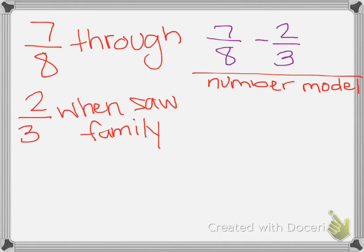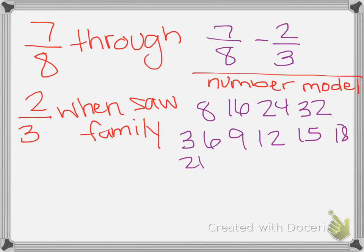Then to actually solve the problem, we have to find a common denominator, because we can't do 7 eighths minus 2 thirds since the denominators are different. So I'm going to list my multiples of 8: 8, 16, 24, 32, and now I'm going to list my multiples of 3: 3, 6, 9, 12, 15, 18, 21, 24. So as we see, 24 would be our common denominator.